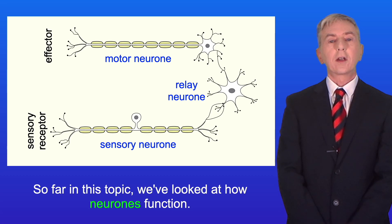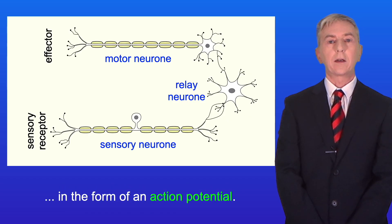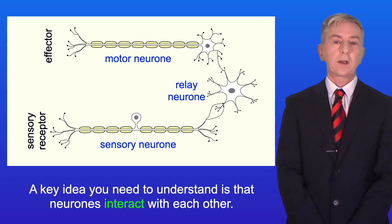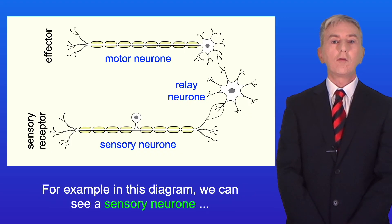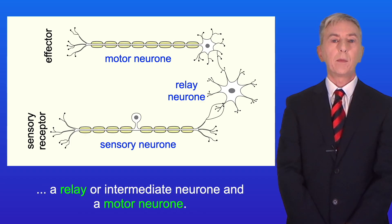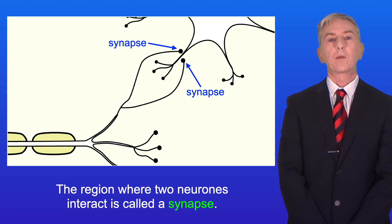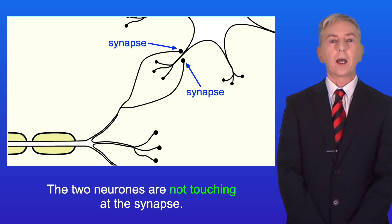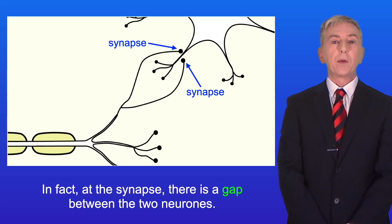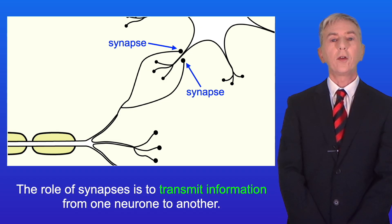So far on this topic we've looked at how neurons function. We've seen that neurons transmit an electrical impulse in the form of an action potential. A key idea you need to understand is that neurons interact with each other. In this diagram we can see a sensory neuron, a relay or intermediate neuron, and a motor neuron. The region where two neurons interact is called a synapse, and we can see the synapses here between the sensory neuron and the relay neuron. The two neurons are not touching at the synapse — in fact there's a gap between them. The role of synapses is to transmit information from one neuron to another.